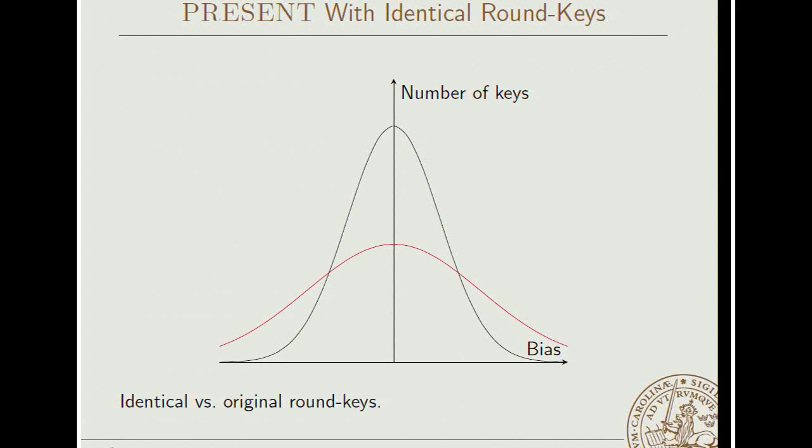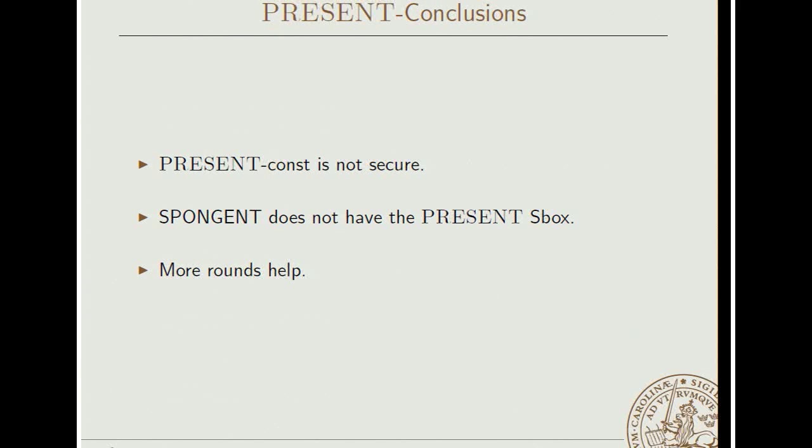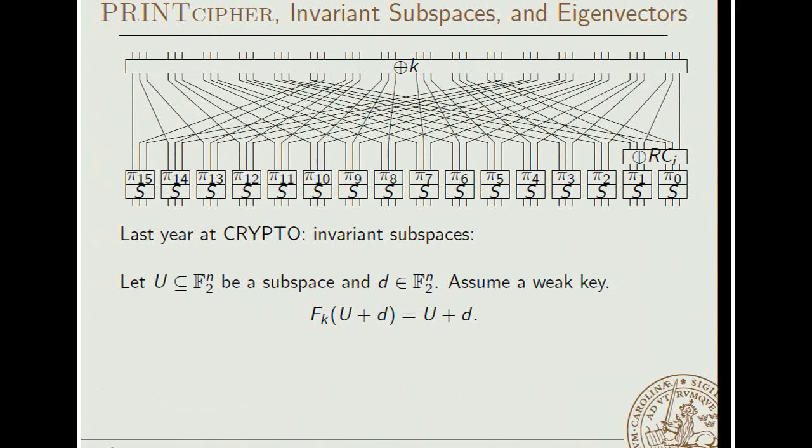So clearly here the key schedule influences the behavior in terms of linear cryptanalysis. The conclusion being that this PRESENT with constant rankings is not secure, or not as secure as original PRESENT. It's worth noting that the hash function spongent, which is sort of based on PRESENT, does not have this s-box, so this does not give any attack or anything on spongent. Indeed, this is the very reason that spongent has another s-box. But more rounds help. With more rounds, we squeeze together this distribution. The variance becomes smaller, so everything still works, given sufficiently many rounds.